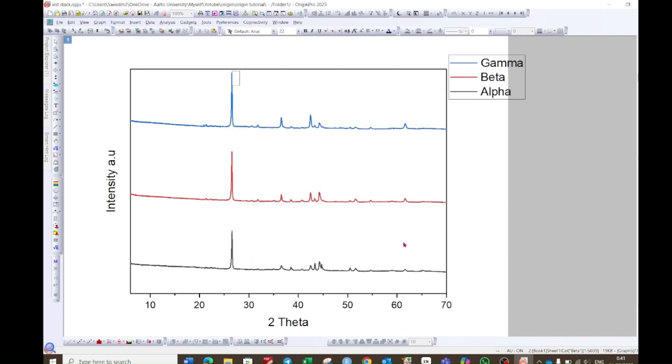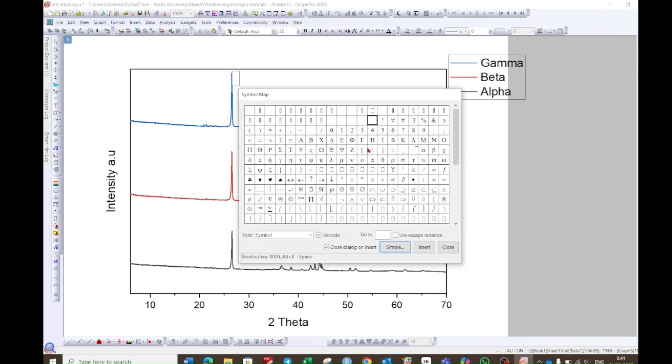If you want to choose different symbols, go to this advanced option. A number of symbols will open. Choose the one that you want. For example, here I want this one and press insert. A symbol will be inserted.